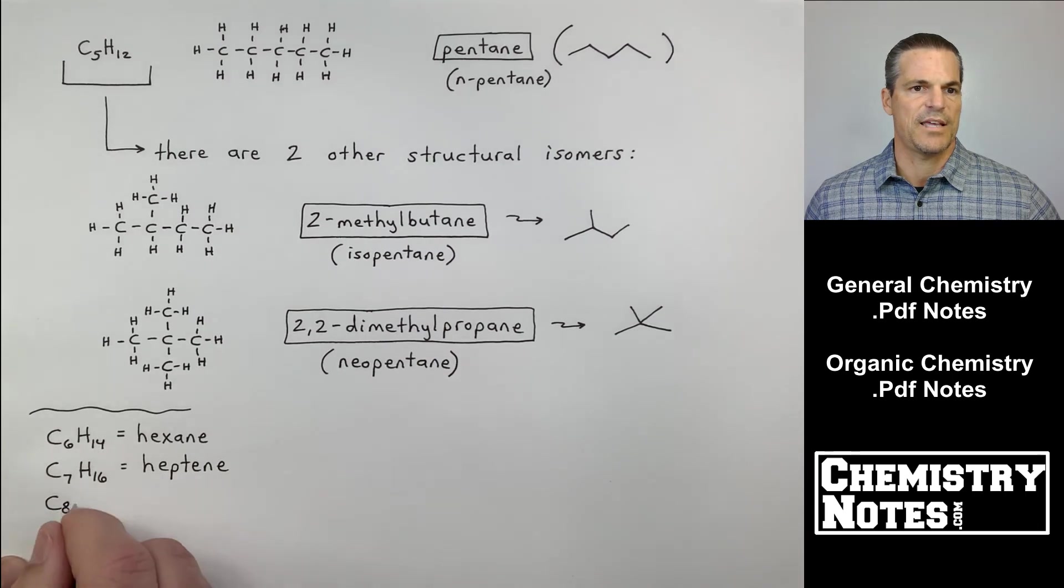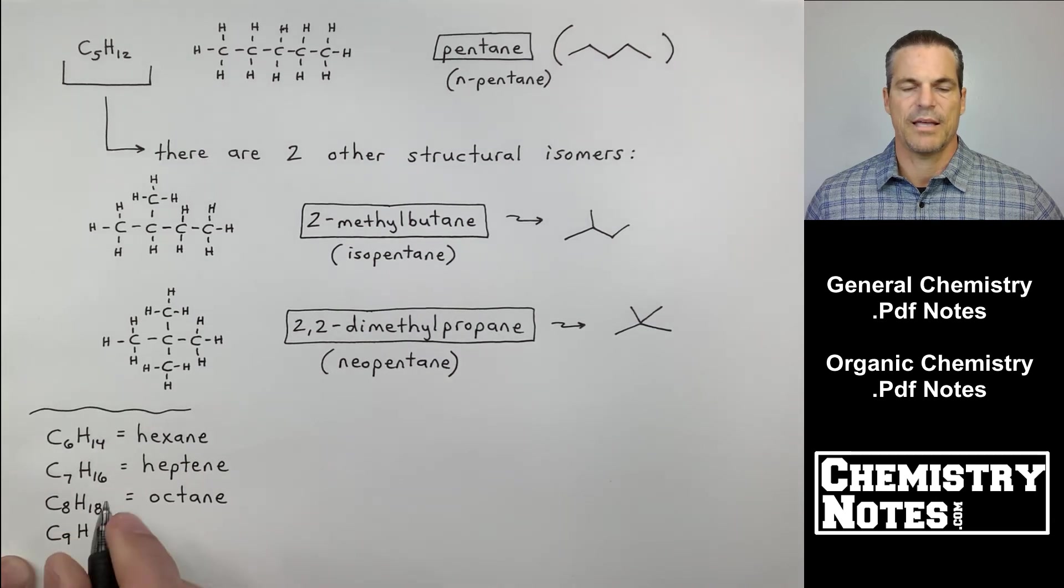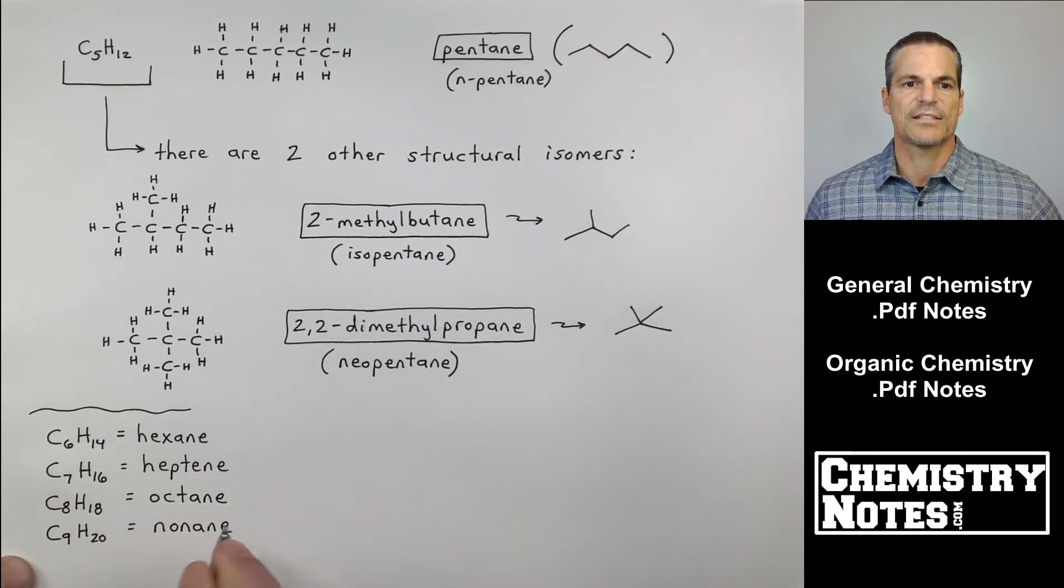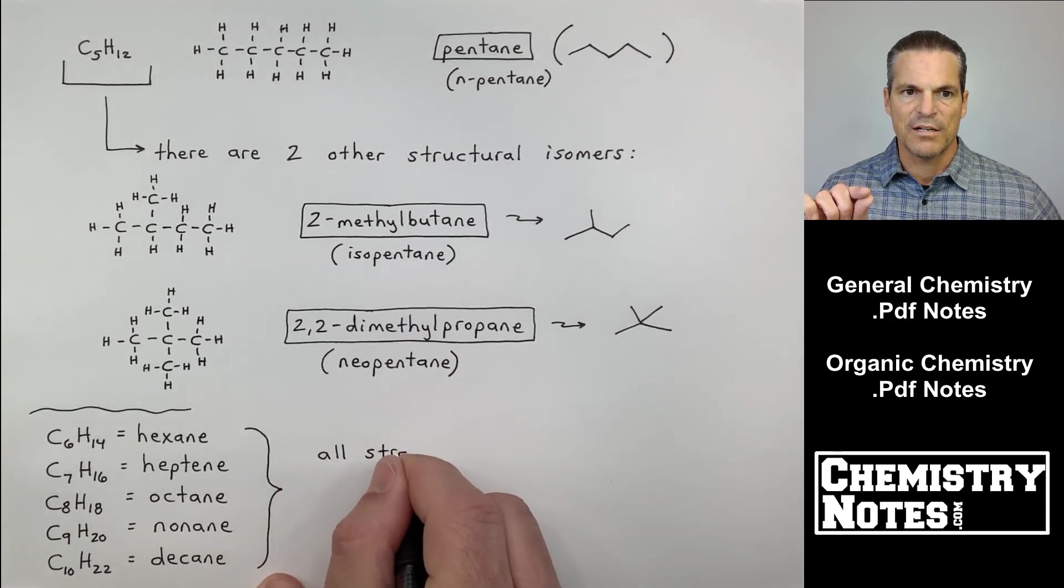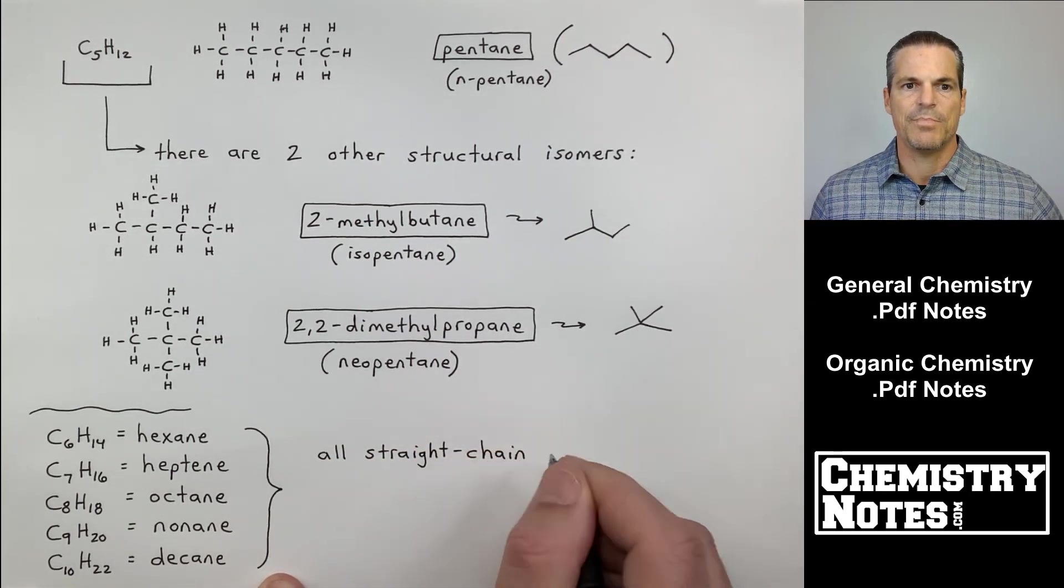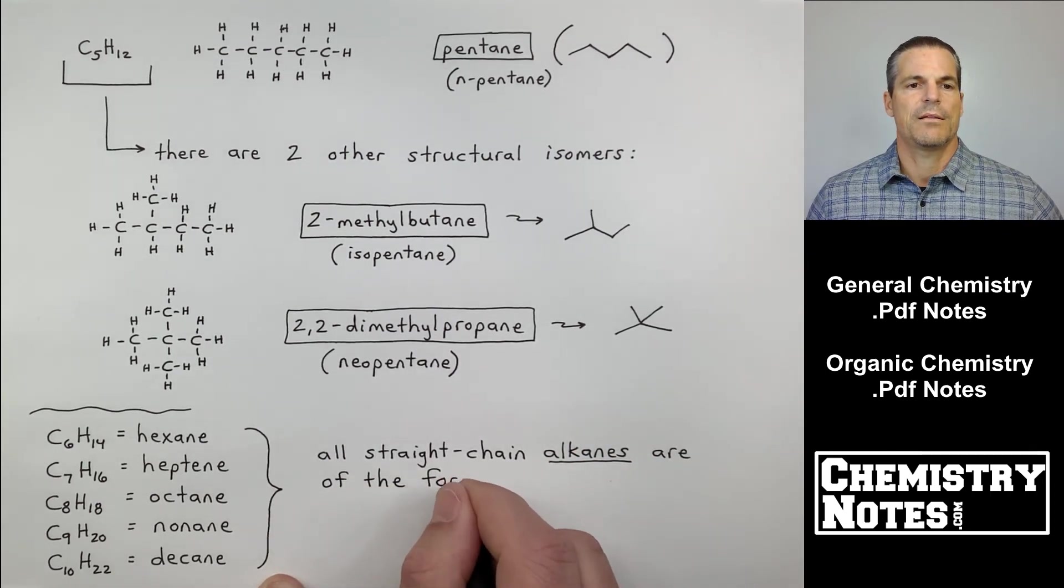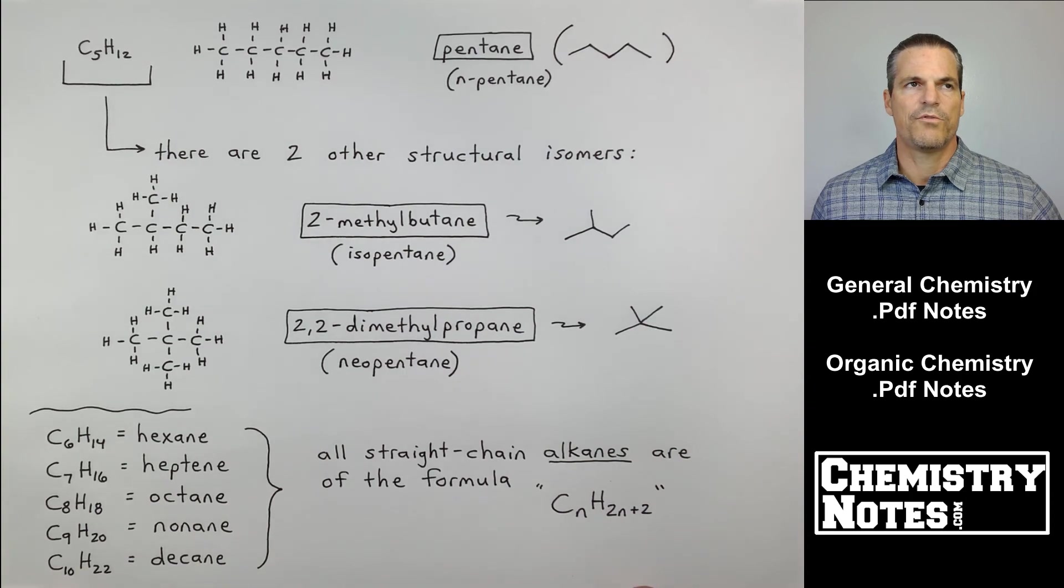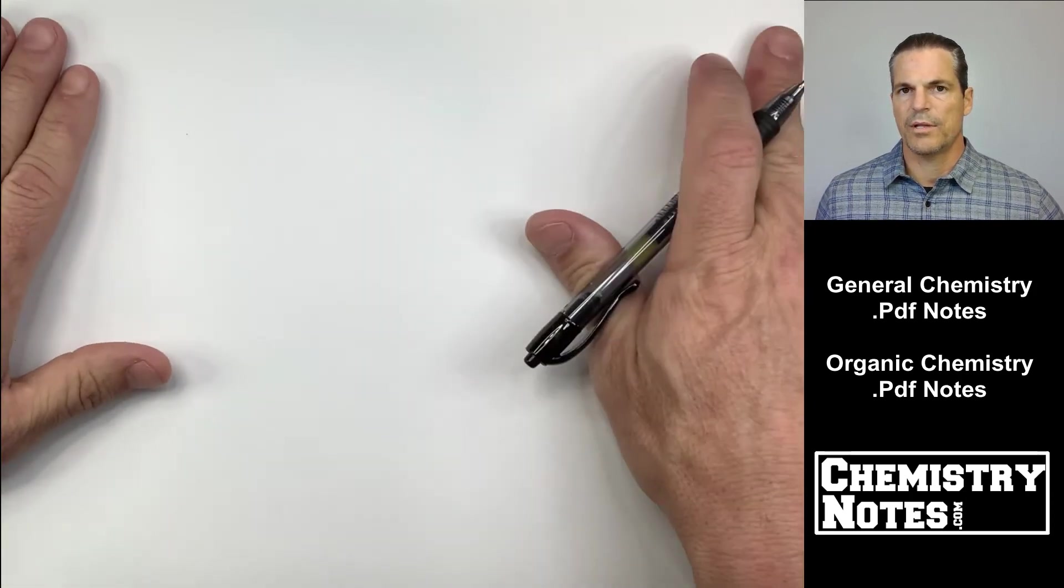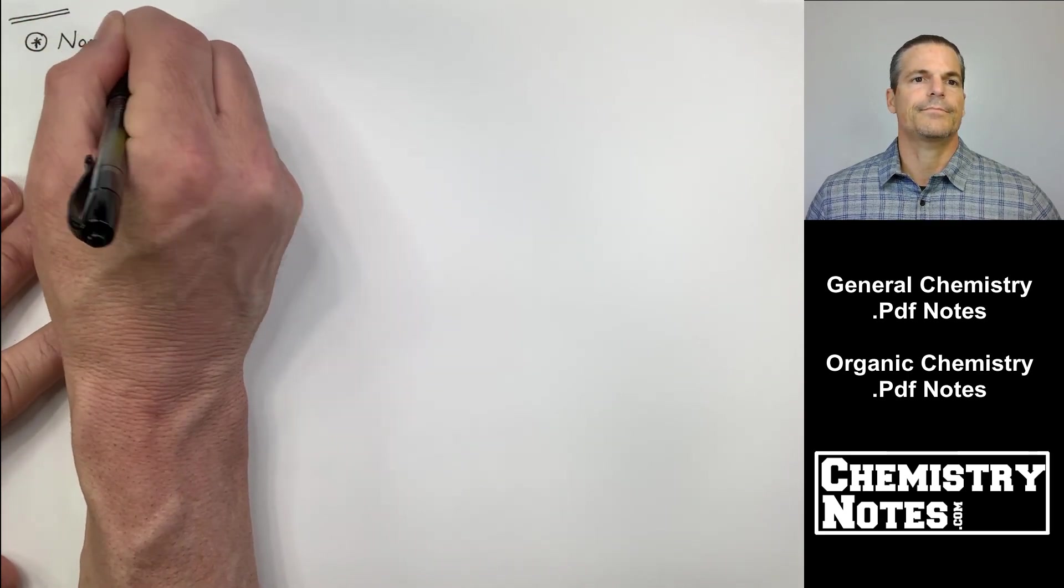C6H14 would be hexane. C7H16 would be heptane. That should not be heptane, it's heptane. C8H18 is octane. C9H20 is nonane. C10H22 is decane. Just remember C7H16 right there should be called heptane, H-E-P-T-A-N-E. Now those are all straight chain alkanes. I could call them N-hexane, N-heptane, N-octane, but they all have the general formula CnH2n+2. In fact, every alkane has that. It doesn't have to be a straight chain.